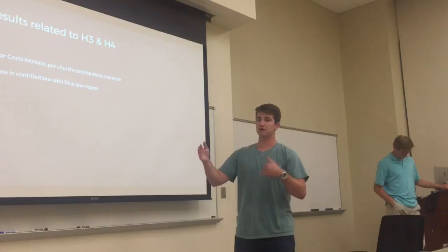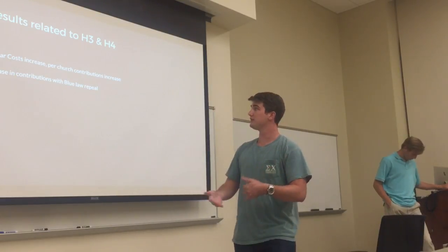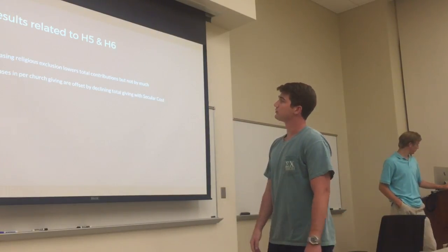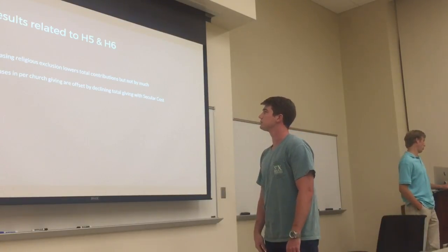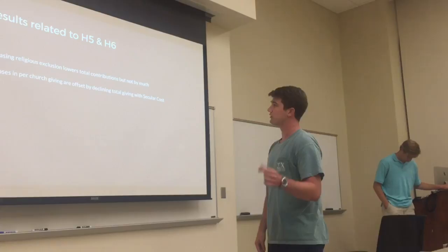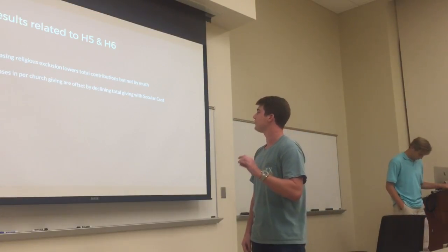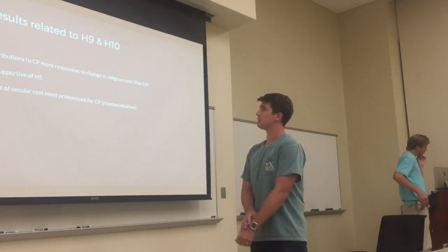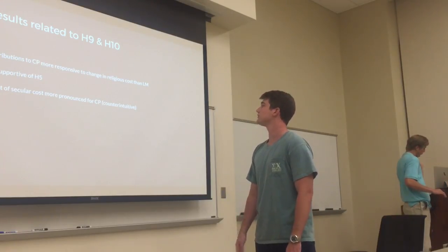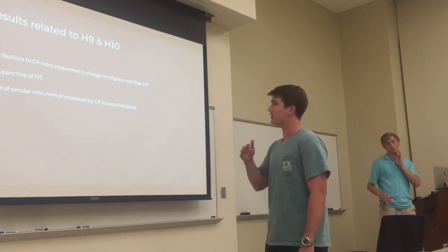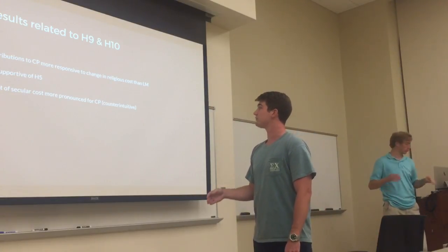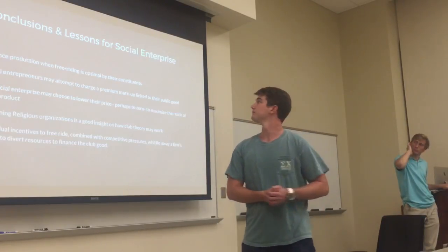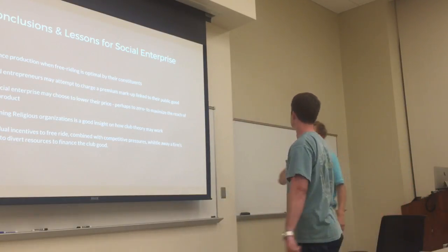As these moral codes begin to diminish over time, we see an increase in contributions due to the high opportunity cost. Results related to hypotheses five and six: increasing religious exclusion lowers total contributions, but not by much. Increases in per church giving are offset by declining total giving with secular cost. Contributions to the Cooperative Program are more responsive to change in religious cost than Lottie Moon — this is not supportive of hypothesis five. The impact of secular cost is more pronounced for the Cooperative Program, which is counterintuitive and we don't totally have an explanation for yet.